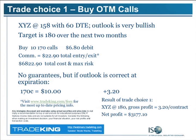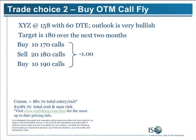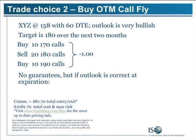Let's look at another scenario on slide 32. Same outlook, but instead of just buying 10 of the 170 calls, you're going to sell 20 of the 180 calls, which corresponds to the target price of 180 in your forecast. And you're also going to buy 10 of the 190 calls. This is a long butterfly spread, but the difference is this is an out-of-the-money spread. Why is it out-of-the-money? Because the options you're selling — that 180 strike — is out-of-the-money relative to where the underlying is today, which is 158.